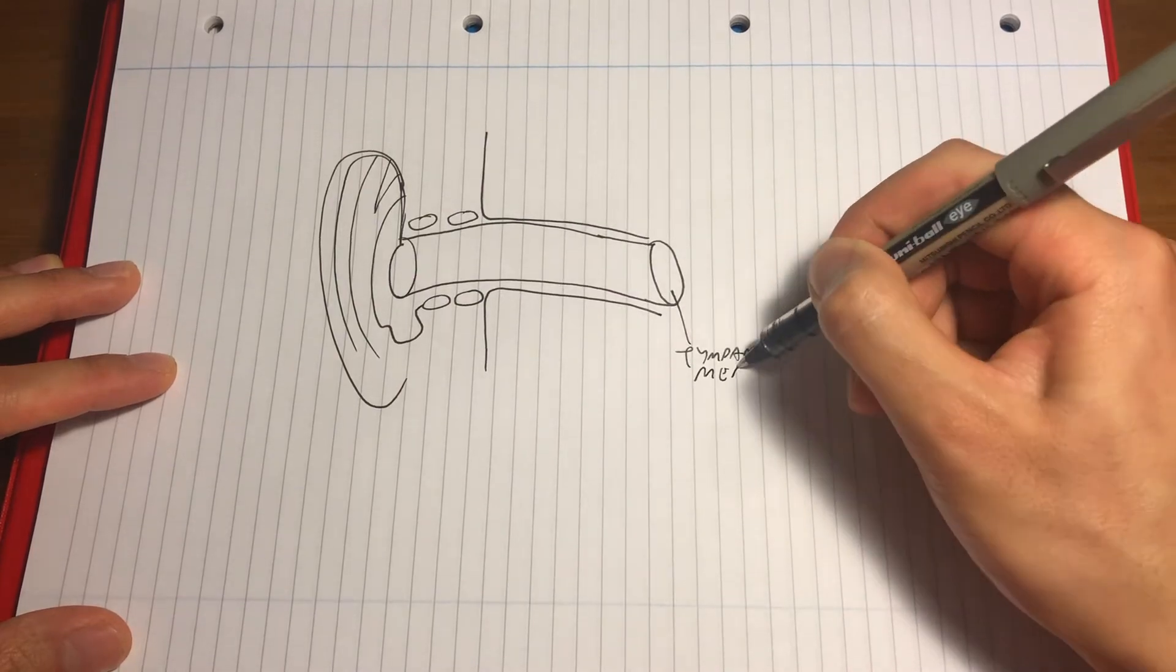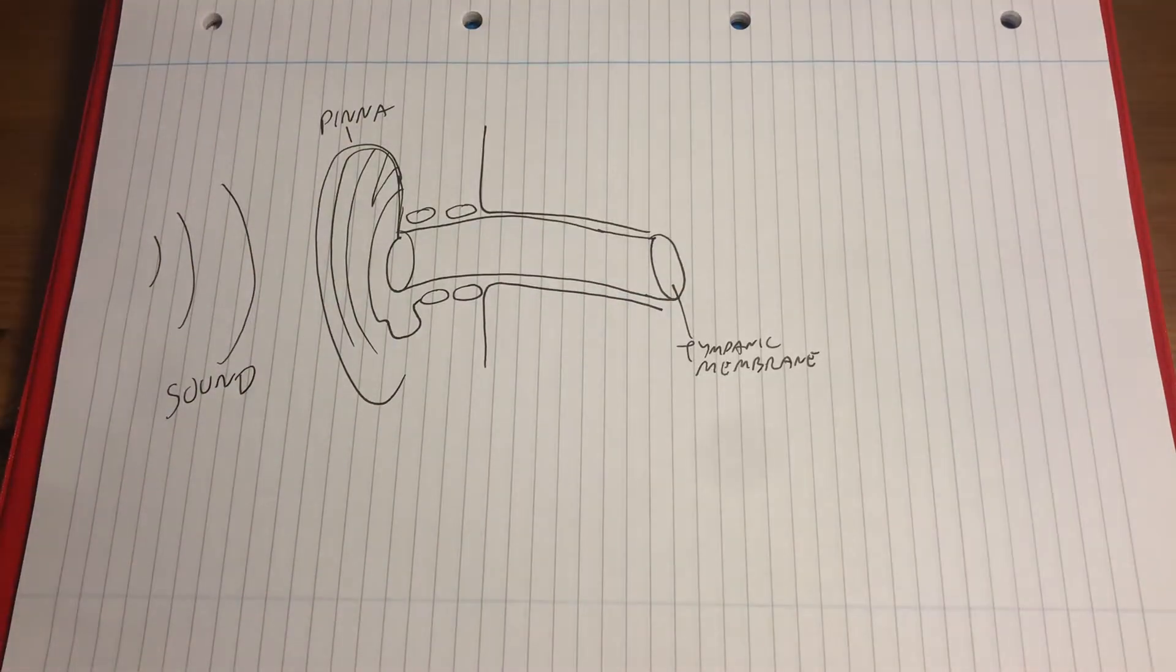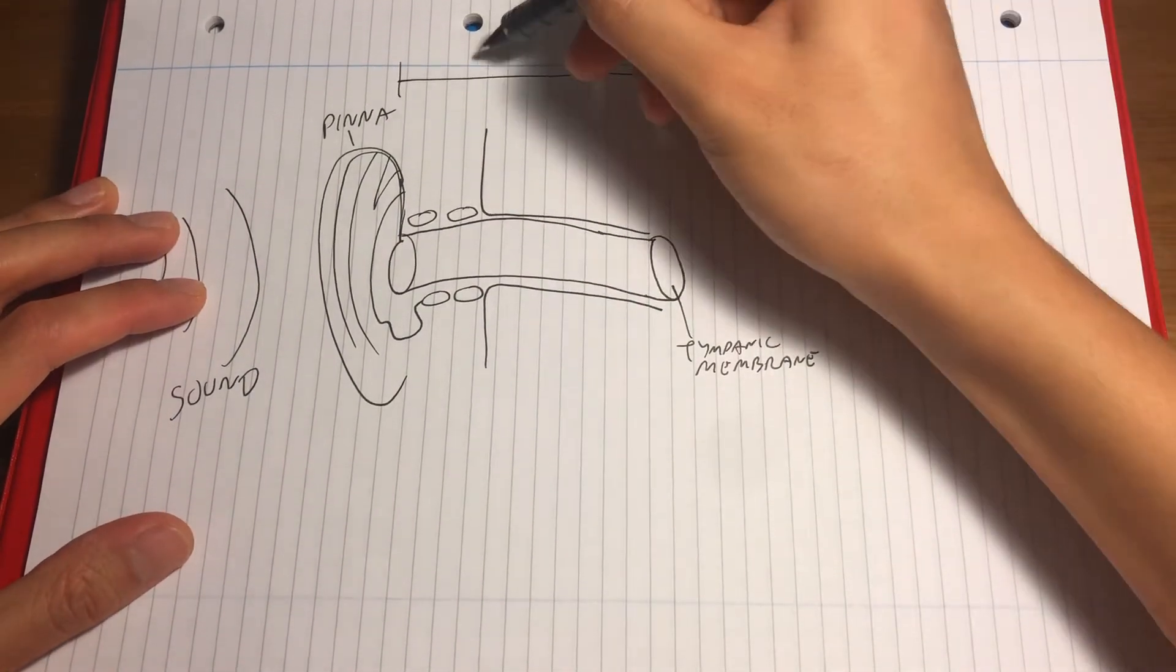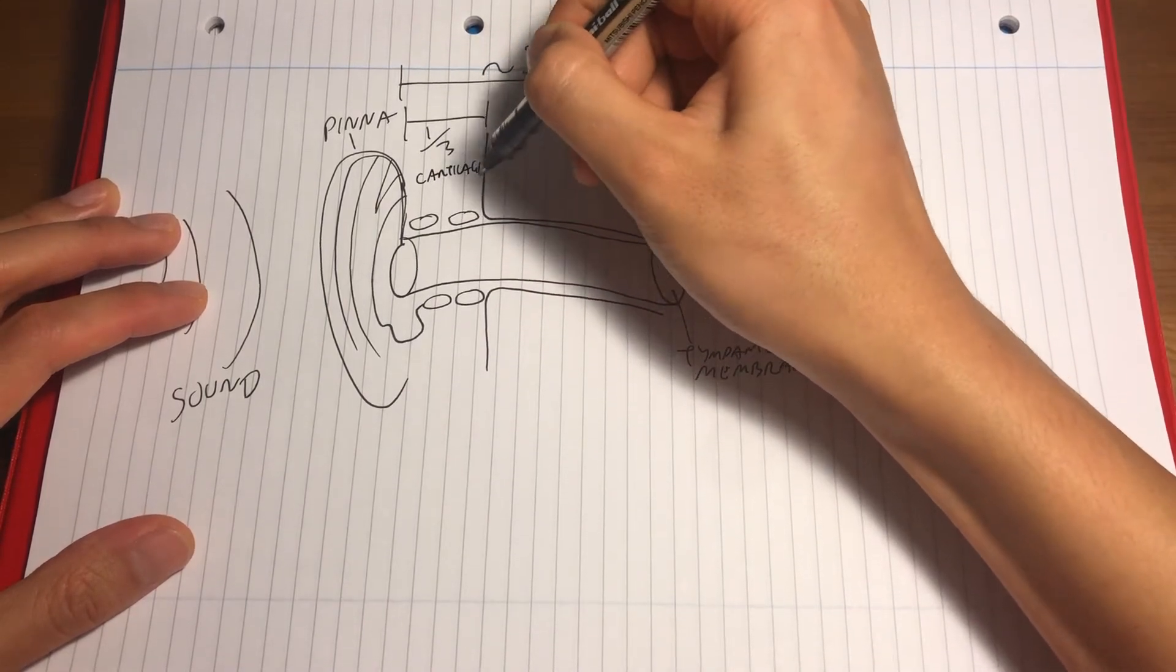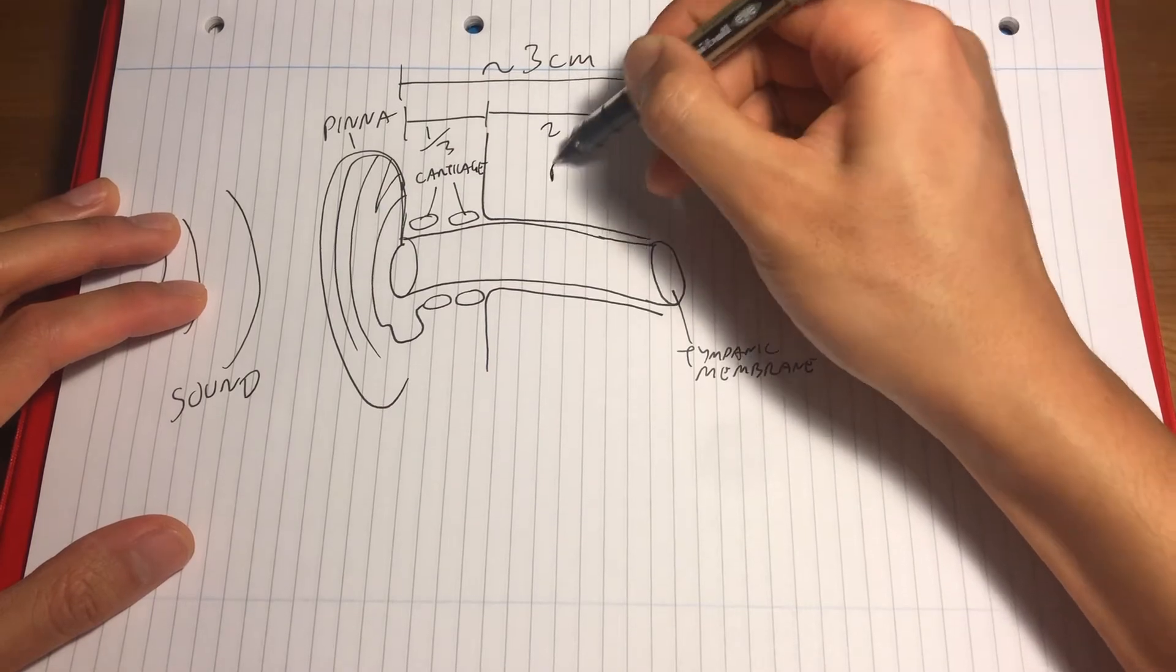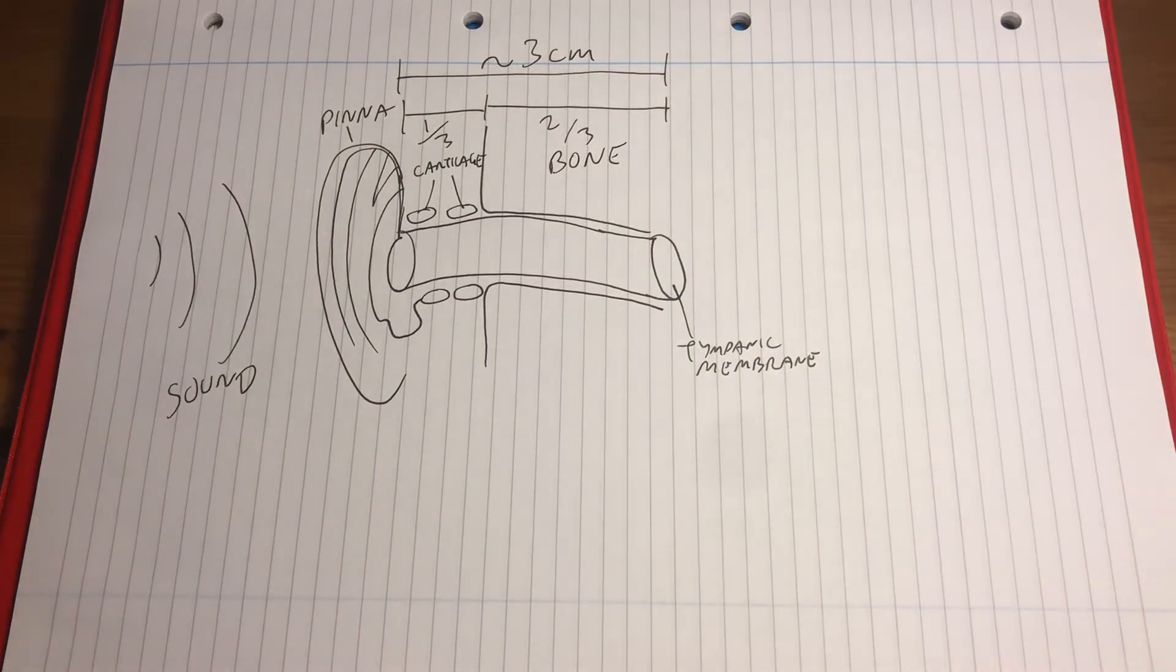Its purpose is to conduct sound from outside to the middle ear. The canal is approximately three centimeters long. The outer third is cartilaginous and the inner two thirds are bony.